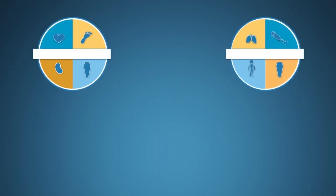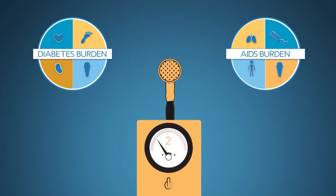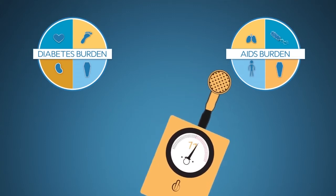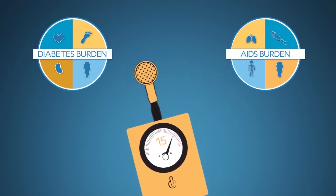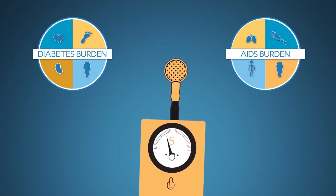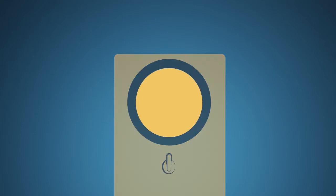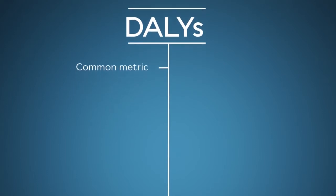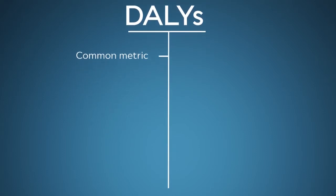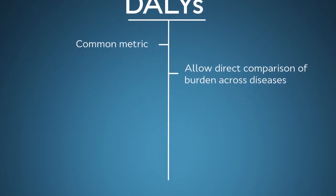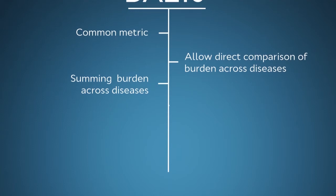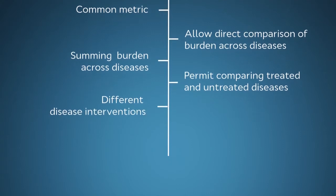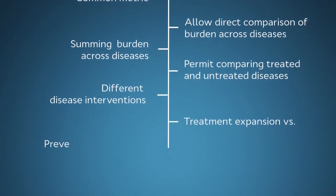Wouldn't it be great if there were a single tool to combine the negative effects of early death and morbidity on well-being? That is, one number to portray the full burden imposed by a disease — a universally recognized and respected method to comprehensively quantify disease burden for a specific disease. Thankfully, there is. It's called a DALY, and it's a common metric that solves the pineapple, banana, broccoli non-comparability problem. DALYs allow direct comparison of the burden of different diseases, summing burden across diseases, comparing treated and untreated disease, and even comparing different types of interventions, such as treatment expansion versus prevention campaigns.